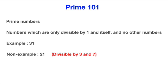As an example, 31 is prime because it has no other factors other than 1 and 31, but 21 is not prime because it is divisible by 3 and 7 as well.